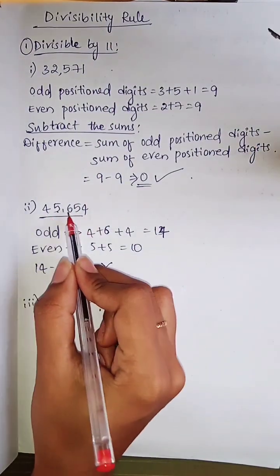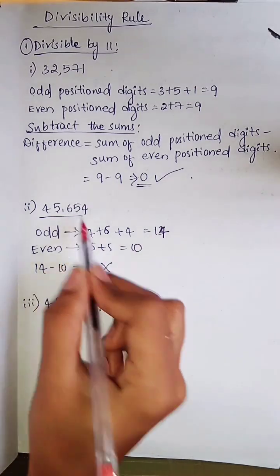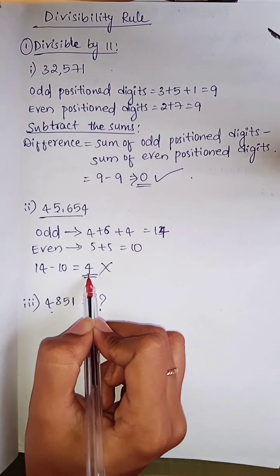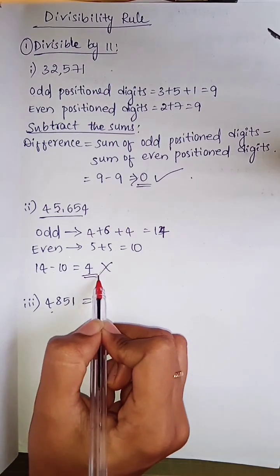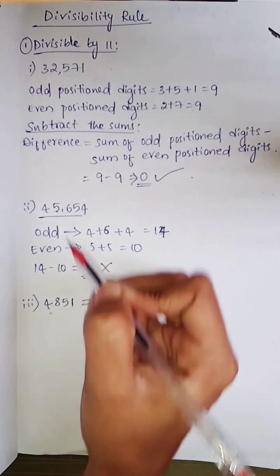The odd position digits are 4, 6, and 4. 5 and 5 are the even position numbers, and we'll get 10. And when we subtract those two, we'll get 4. It will not be divisible by 11.